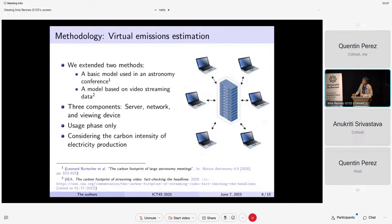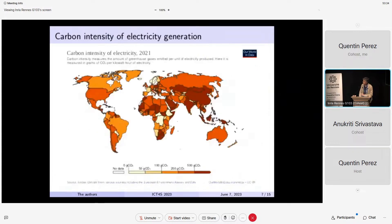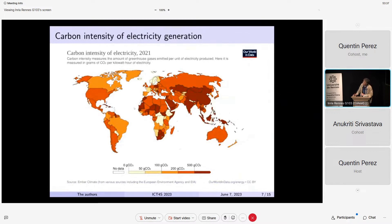And we based this study on similar work that was done for an astronomy conference, a big one, and some other models on streaming. Probably you know very well, some of you, these tools. And what we did is to consider the energetic mix of the country. That is quite different depending on the country. OK, so this is the energetic mix. So we have a tool in France with RTE.